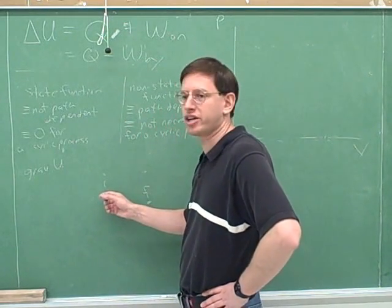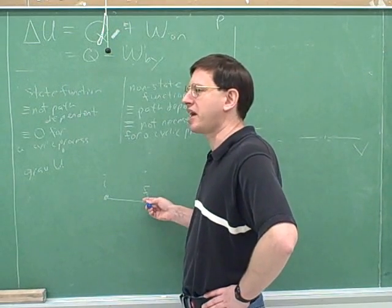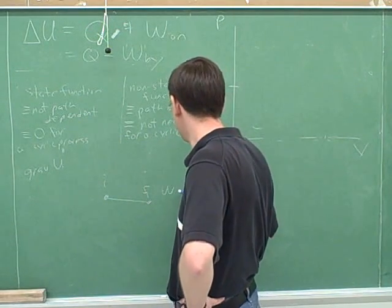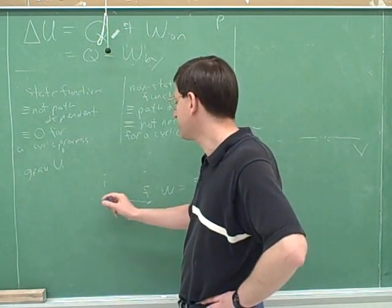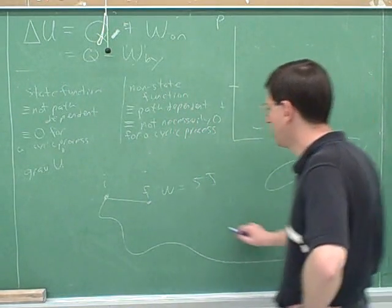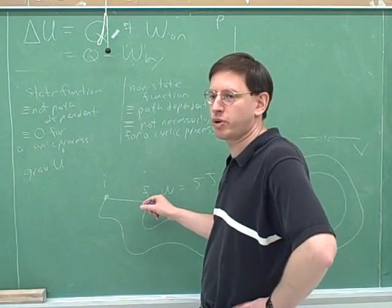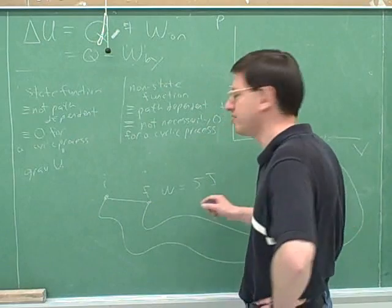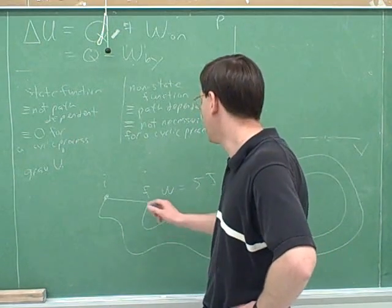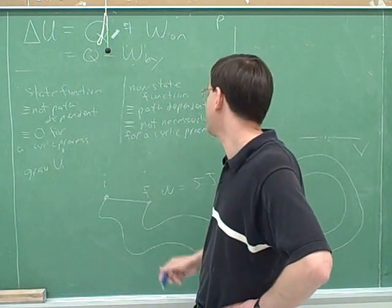Let's say I start with the chalk over here and move it over here. As I move the chalk, work is being done against friction from the board — maybe five joules. Now let's say the chalk starts in the same place but I move it along a much longer, winding path and end up at the same final point. Did friction do more or less than five joules? More — because friction was working against me at every point along the longer path. That path was about ten times as long, so maybe 50 joules. The longer the path, the more work done by friction.